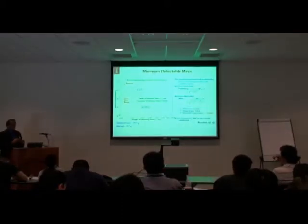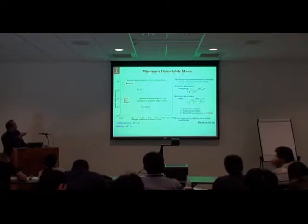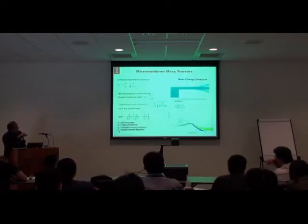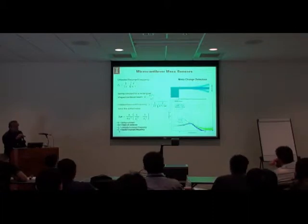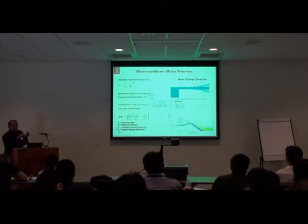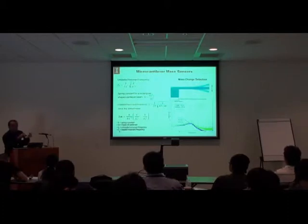You can calculate the minimum detectable mass using some simple approximations. Essentially, it has to do with how sharp this peak is — how high the Q is. The higher the Q, the smaller the shifts I can detect. So the minimum detectable mass is a function of how small a shift I can pick up.